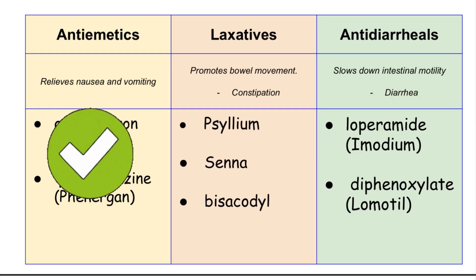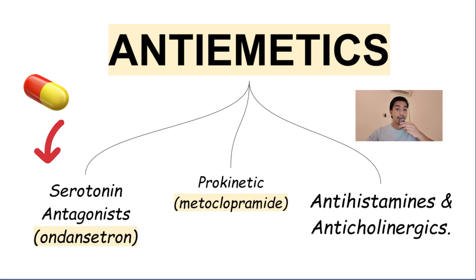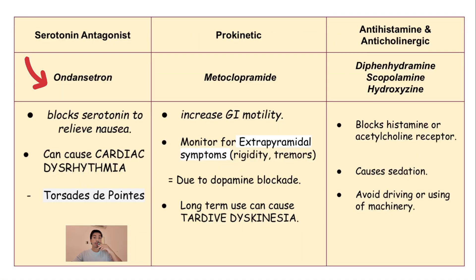First, let's discuss anti-emetics. Anti-emetics, nurses, relieve nausea and vomiting. There are three types of anti-emetics: serotonin antagonists, prokinetics, and antihistamines and anticholinergics. The first type is the serotonin antagonists. An example of serotonin antagonists is ondansetron.